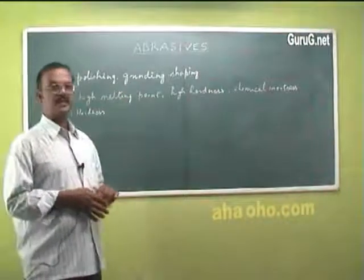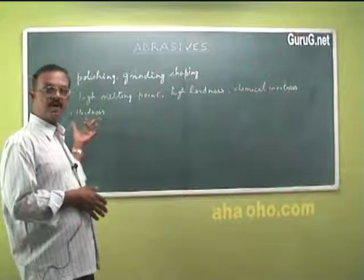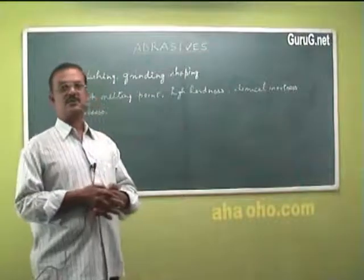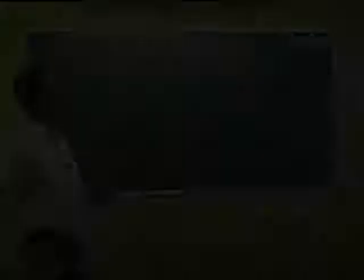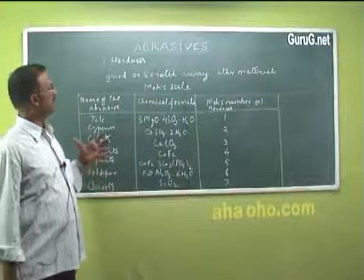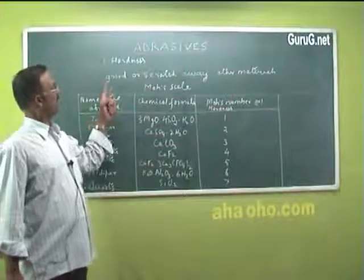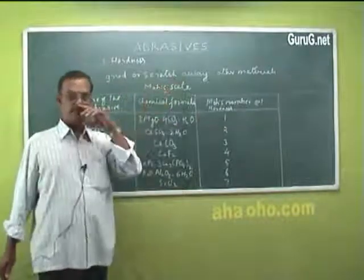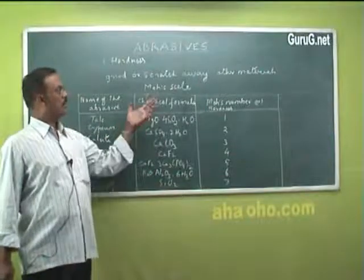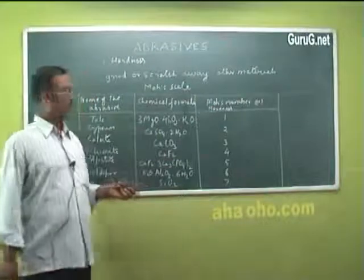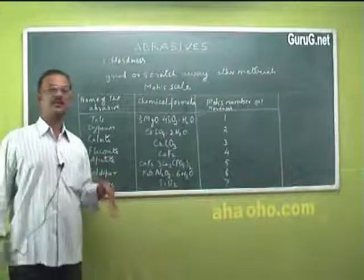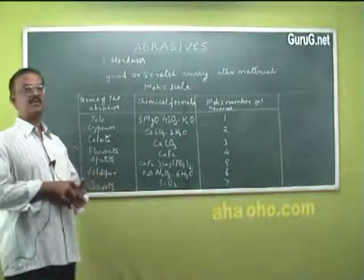First we will see what the term hardness means. Abrasives should be very hard so that they can be used for cutting other materials. Hardness is the property of the abrasive to grind or scratch away other materials. This is measured in terms of Mohs scale or Vickers scale. There are many abrasives and they do not all have the same hardness.